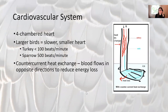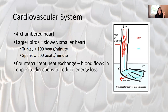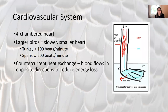The cardiovascular system of birds is highly efficient. They have a four-chambered heart, so double circulation and total separation of oxygenated and deoxygenated blood. Bigger birds generally have a slower, smaller heart relative to body size, and smaller birds have a relatively bigger, faster heart. A turkey, not a big flyer, has less than 100 beats per minute; sparrows have 500 beats per minute. Countercurrent exchange — which we saw in fish — also happens in birds, particularly birds in cold water.